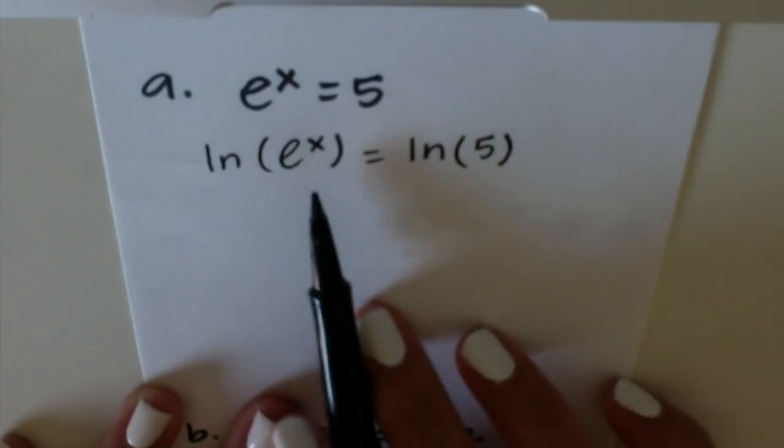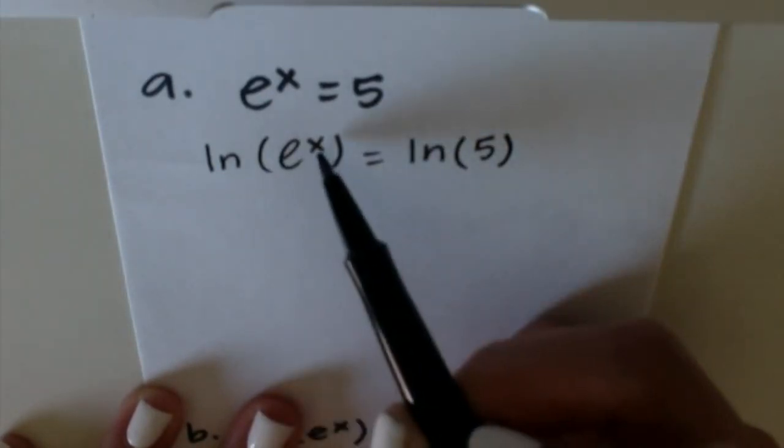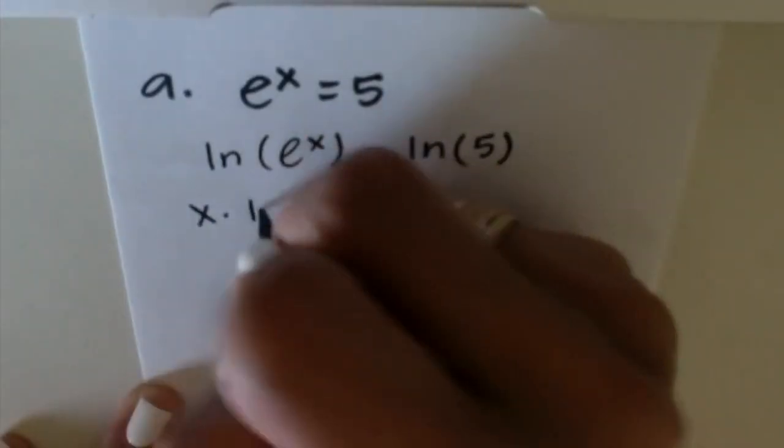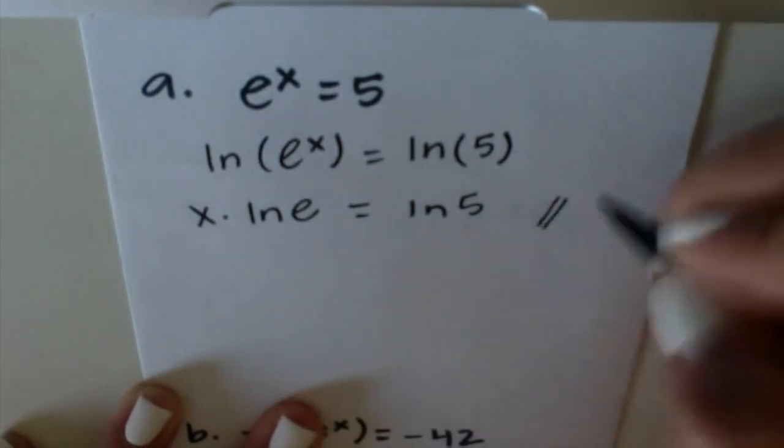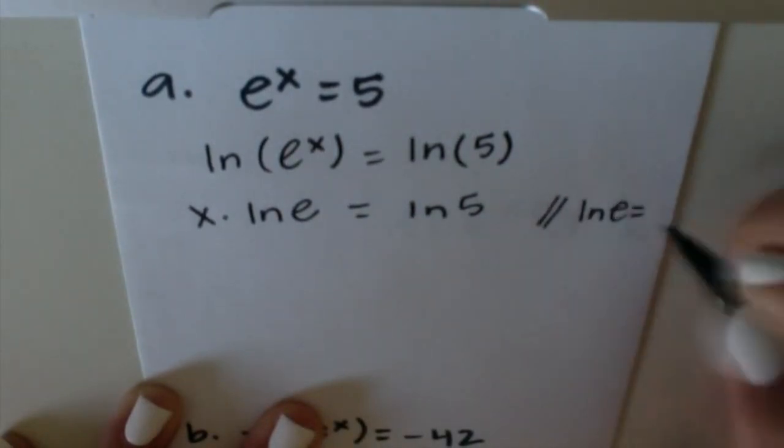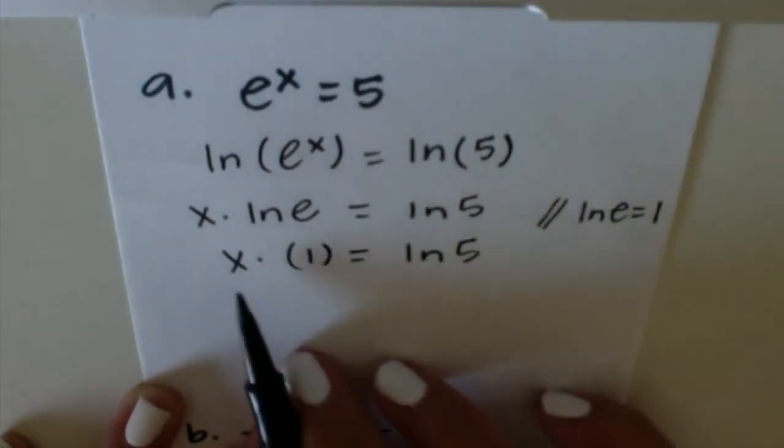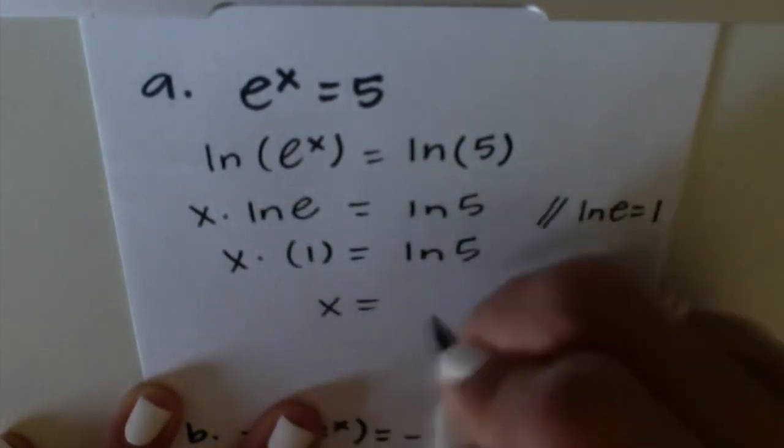Now, since we've taken the natural log of both sides, we can move this exponent into the front. We know that ln(e) = 1, and then obviously x times 1 is just x. So you get x = ln(5).